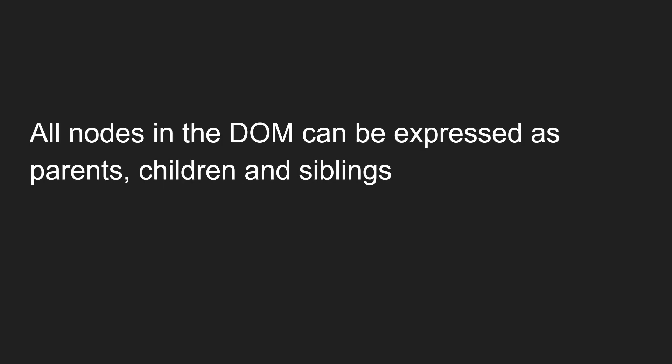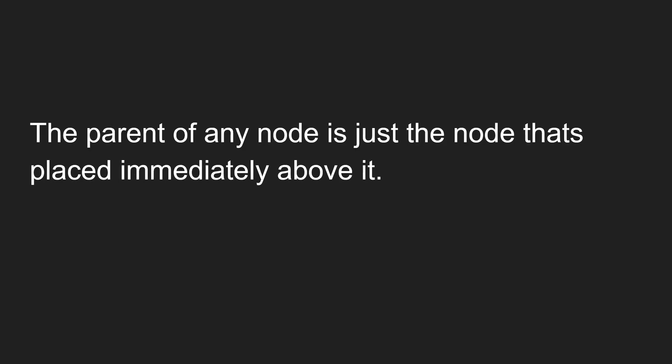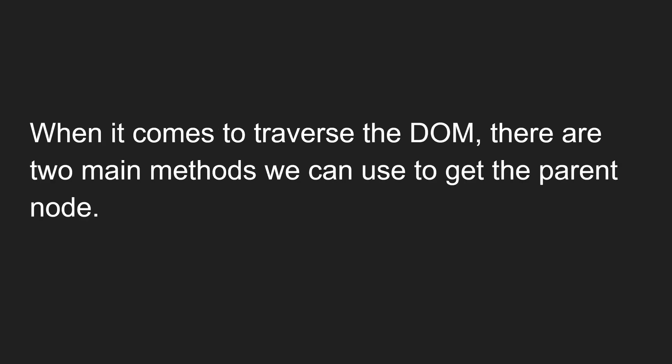All nodes in the DOM can be expressed as parents, children, and siblings. Either a node is a parent, a child, or a sibling. The parent of any node is the node placed immediately above it. When we are traversing the DOM, there are two main methods available in the DOM API to get the parent node for a particular node.